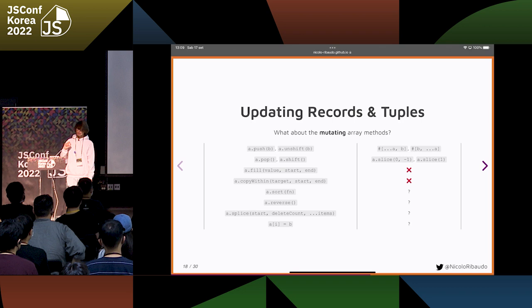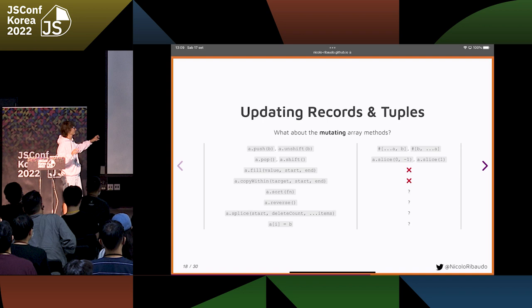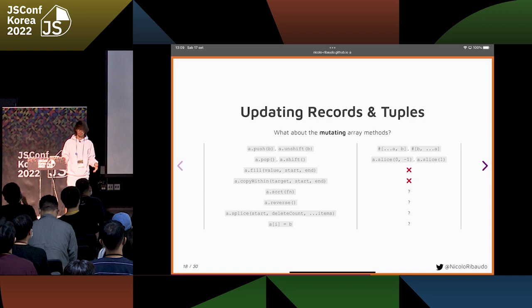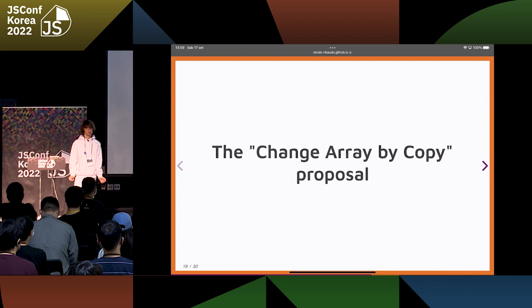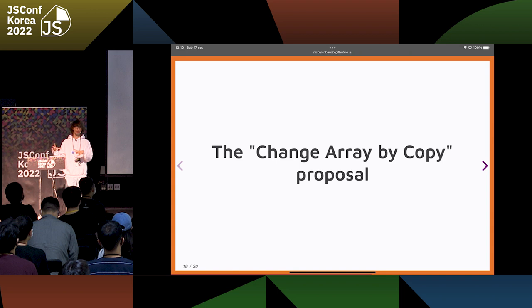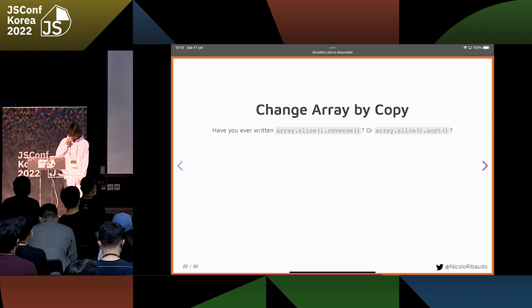What about the other array methods — like sort, reverse, splice, and setting an array element? It makes sense to sort a tuple and get the sorted version. The problem is that the sort array method modifies the original array, so this doesn't work on immutable things. So let's put aside the records and tuples proposal for a moment and take a quick look at the Change Array by Copy proposal, which was born as a child proposal of the records and tuples one.